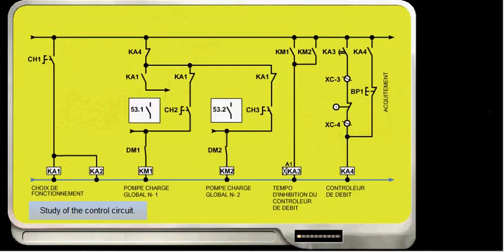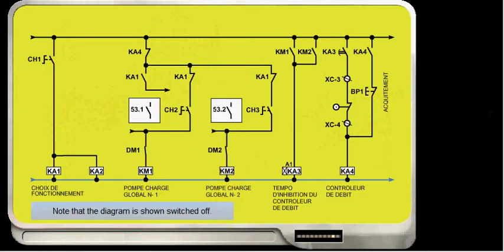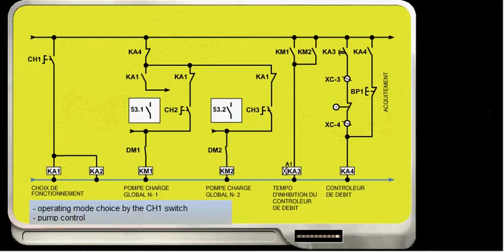Study of the control circuit. The control circuit ensures piloting of the contactor coil KM1 and/or KM2. Note that the diagram is shown switch off. We can recognize three important sections: operating mode choice by CH1 switch, mode manual or automatic.